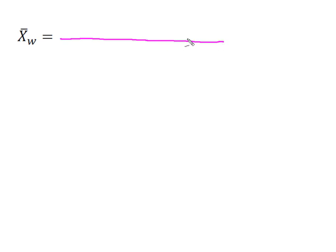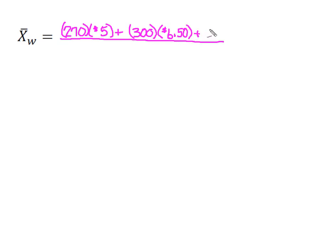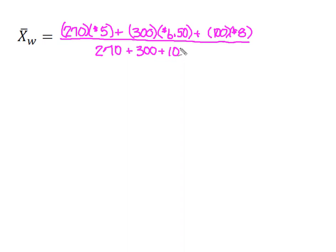So we're going to set up our weighted average here. They bought 270 bushels at $5 a bushel, and they also bought 300 bushels at $6.50. Last but not least, they bought 100 bushels of Red Delicious and paid $8 a bushel for those. In the bottom of my formula I have my weights: 270 Granny Smith, plus 300 Macintosh, plus 100 Red Delicious.